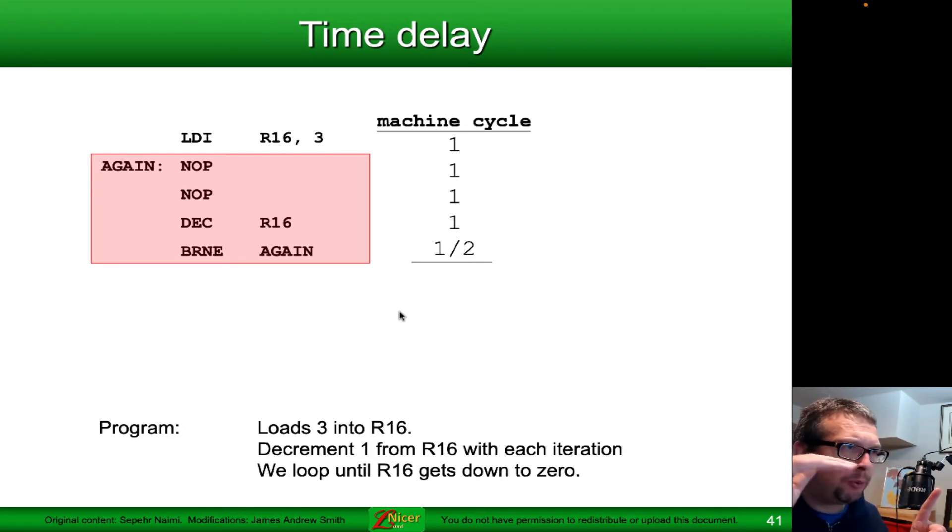Then nop, one, nop, one, decrement, one, branch. Branch, if not equal, that's two cycles right there. Now the contents of R16 is going to be one. So we're now ready to go back up to the loop.